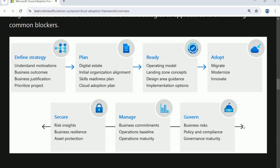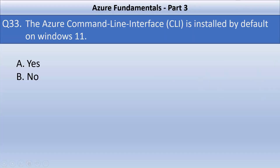The link to this Microsoft documentation is available on your screen. I highly recommend you go through the Cloud Adoption Framework to understand it in more detail, as you can get multiple variations of these questions in the exam. Now let's validate one more statement: the Azure Command Line Interface is installed by default on Windows 11. This is an incorrect statement. The CLI is a cross-platform command line tool that can be installed locally. For Windows, the Azure CLI is installed via MSI or a zip package, giving you access through the Windows command prompt or PowerShell. It is an exclusive installation and does not come packaged with the OS.